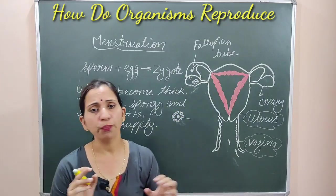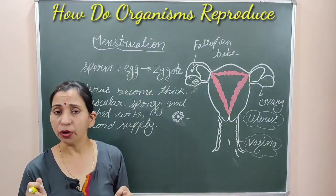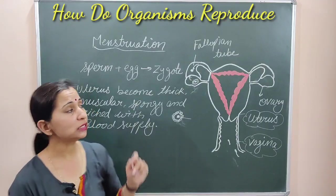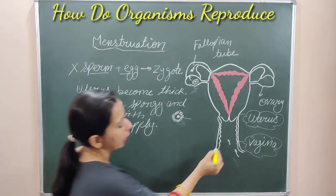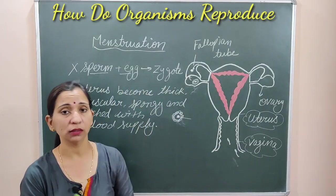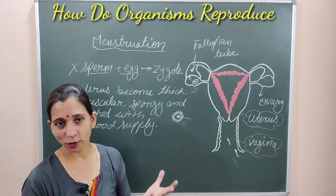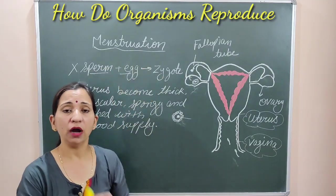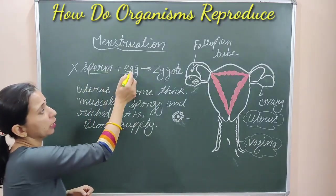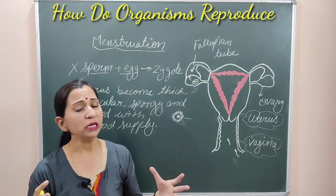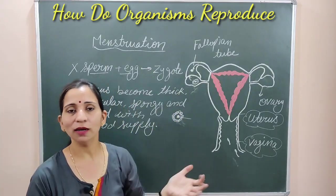This is the normal reproductive process. In the menstruation cycle, what happens if the zygote is not formed — if fertilization does not happen? If sperm does not enter, or enters but cannot reach the egg, or reaches but cannot fertilize it — then the zygote will not form. If egg and sperm do not fuse, fertilization will not occur, zygote will not form, and therefore the uterus preparation serves no purpose.